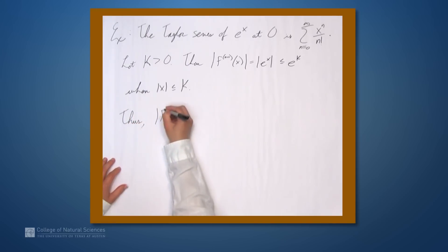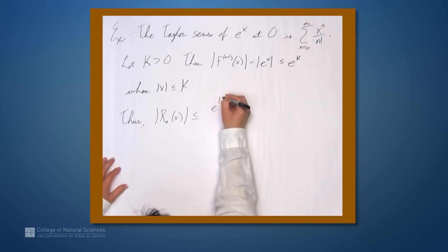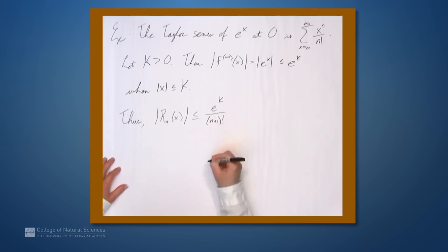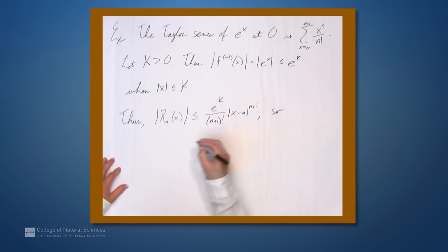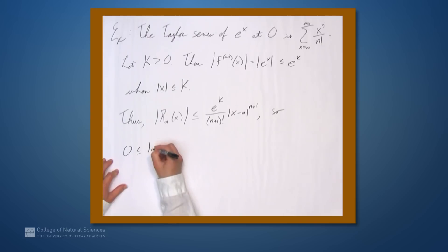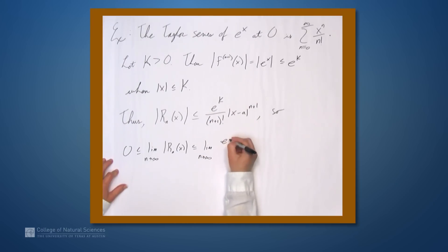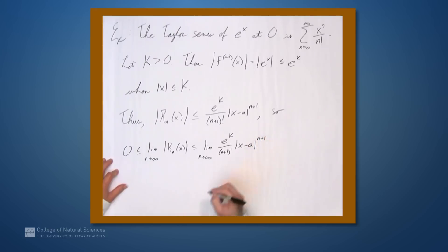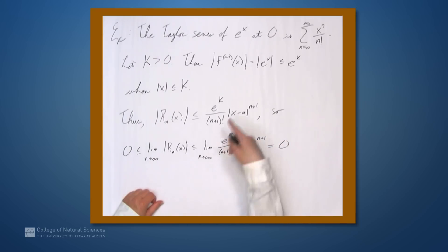So we have the absolute value of r sub n of x, bounded above by Taylor's inequality as e to the k over (n+1) factorial times (x minus a) to the (n+1). Therefore, 0 is less than or equal to the limit as n goes to infinity of the absolute value of r sub n of x, and this is less than or equal to the limit as n goes to infinity of e to the k over (n+1) factorial times the absolute value of (x minus a) to the (n+1), and this limit is 0, for all values of x within the appropriate range.